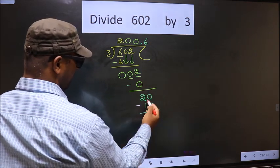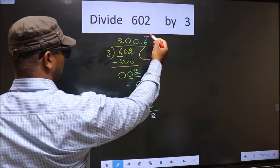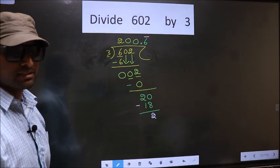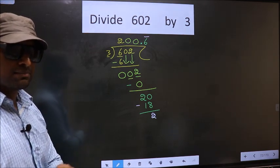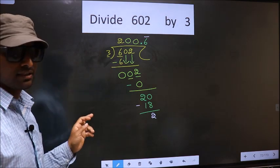Now you subtract and get 2. We got 2 again, which means we get a bar on 6. Did you understand where the mistake happens? You should not do that mistake. Am I clear?